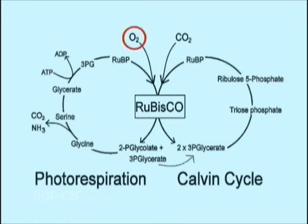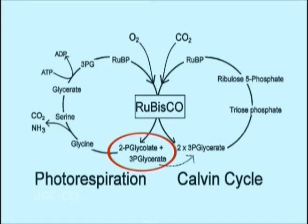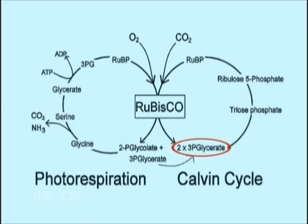Addition of molecular oxygen to RuBP produces 3-phosphoglycerate and 2-phosphoglycolate. 3-phosphoglycerate or PGA is the normal product of carboxylation and productively enters the Calvin cycle. Phosphoglycolate, however, inhibits certain enzymes involved in photosynthetic carbon fixation and hence is often said to be an inhibitor of photosynthesis. It is also relatively difficult to recycle.